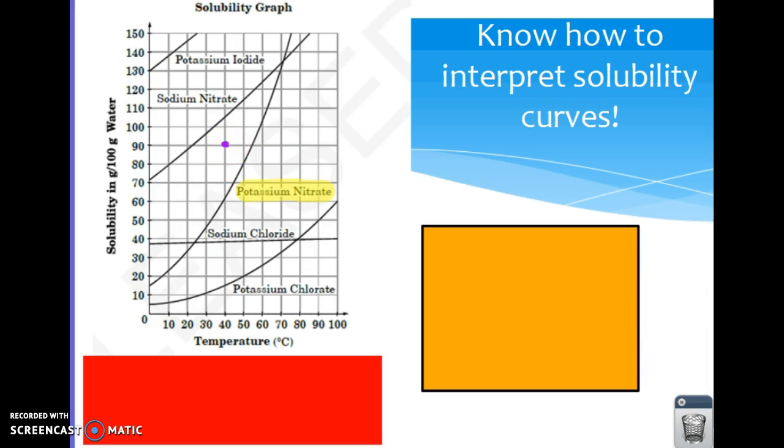As a last example, if you have a dot that is directly on a line, so let me use this one for an example, that means potassium chlorate at 50 degrees has exactly 20 grams of solubility. That is called saturated, because it is right on the line.